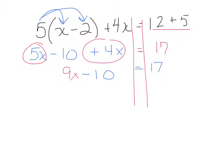So at this point, I have a normal two-step equation. Add 10 to both sides. Let's cancel. Leave me with 9x is going to equal 27. Divide by 9, divide by 9. My x is going to equal 3.